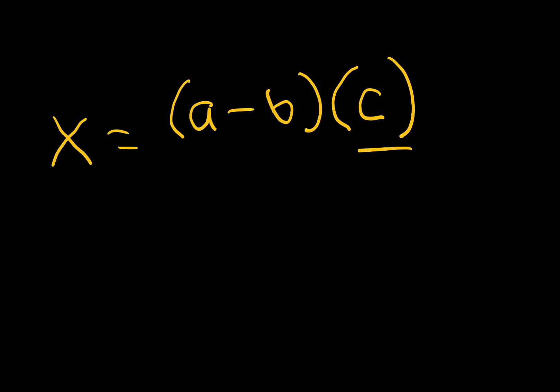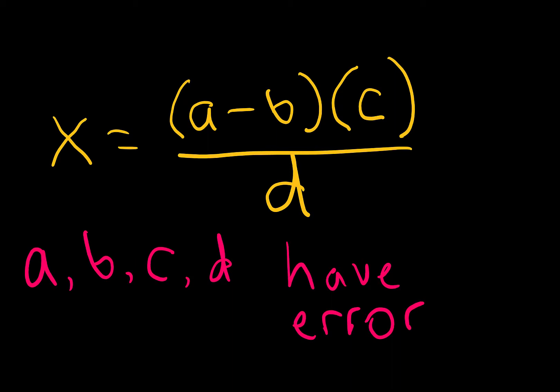The example I will show you will look at a form like this. Each of these values A, B, C, and D are going to have some uncertainty associated with it. In other words, a standard deviation. But before we figure out how to combine all these errors we have to think about how this equation is coming to be in the first place.